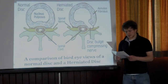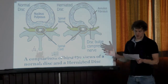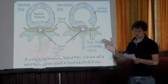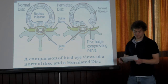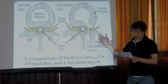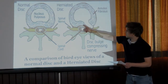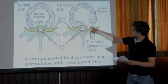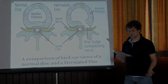Here is a bird's eye diagram comparing two spines. The first spine on the left portrays a healthy, injury-free spine with an intact annulus fibrosis. The spine on the right portrays the tear of the annulus fibrosis and shows the nucleus pulposus — located within the annulus fibrosis — bulging out and compressing.